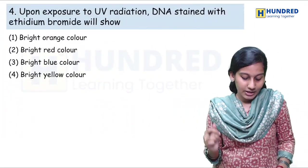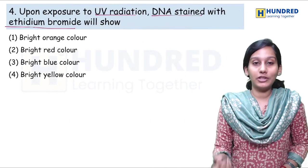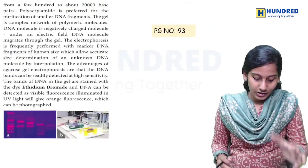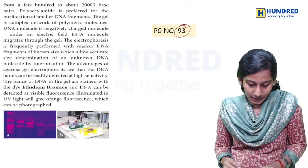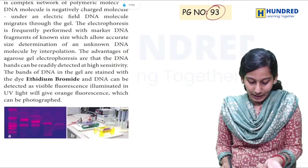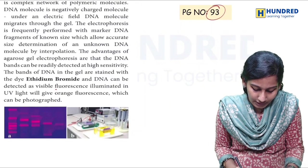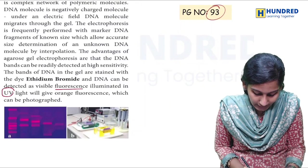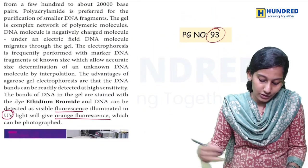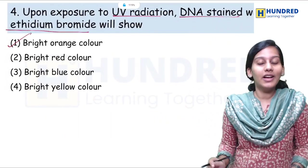Next question: upon exposure to UV radiation, DNA stained with ethidium bromide will show — that is, in agarose gel electrophoresis. In page 93, in the last line, ethidium bromide will stain on both — like the fluorescence light. Every fluorescence will be eliminated on exposure to UV light. We will give an orange inflorescence. The right answer is bright orange color.